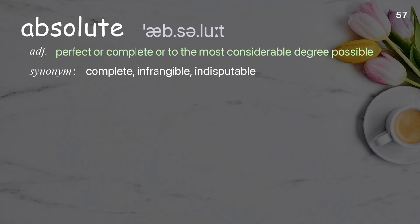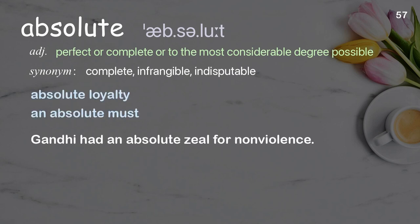Absolute: perfect or complete, or to the most considerable degree possible. Examples: absolute loyalty, an absolute must. Gandhi had an absolute zeal for non-violence.